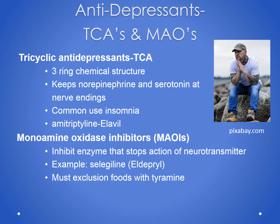Next we have the MAO inhibitors, or monoamine oxidase inhibitors. These inhibit an enzyme that stops the breakdown of neurotransmitters serotonin, norepinephrine, and dopamine. That enzyme also helps break down a molecule called tyramine, which affects our blood pressure. Patients who take MAOs must exclude high-tyramine foods from their diet, or it could cause a hypertensive crisis. Common high-tyramine foods include beer, bologna, lunch meats, and cheeses — think of a Super Bowl party.